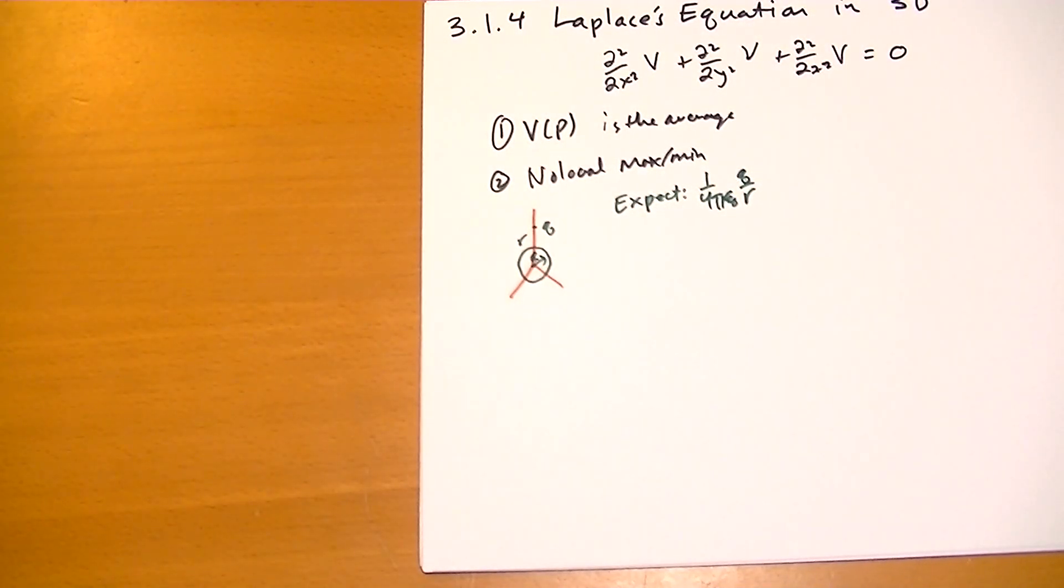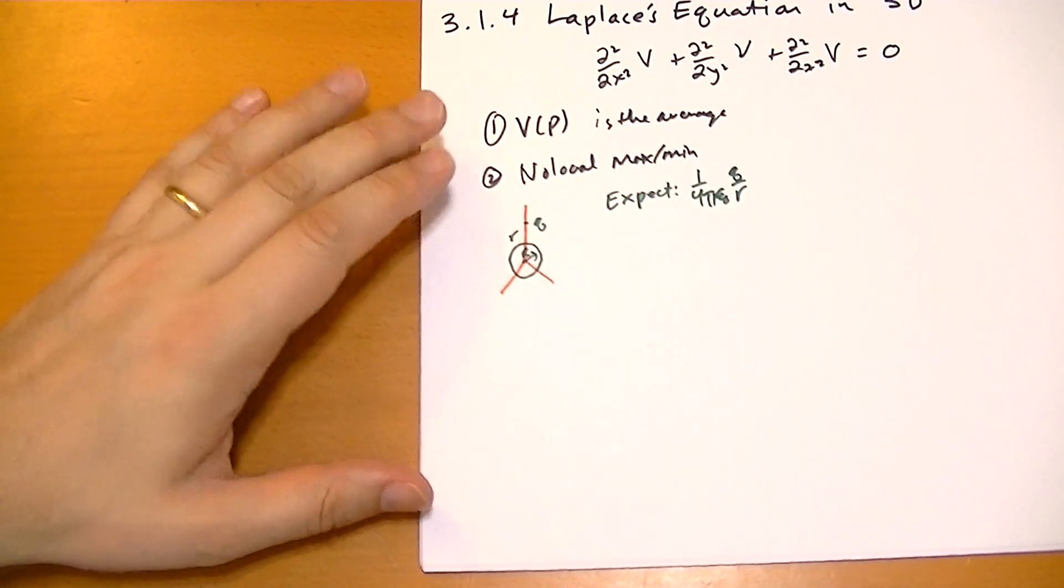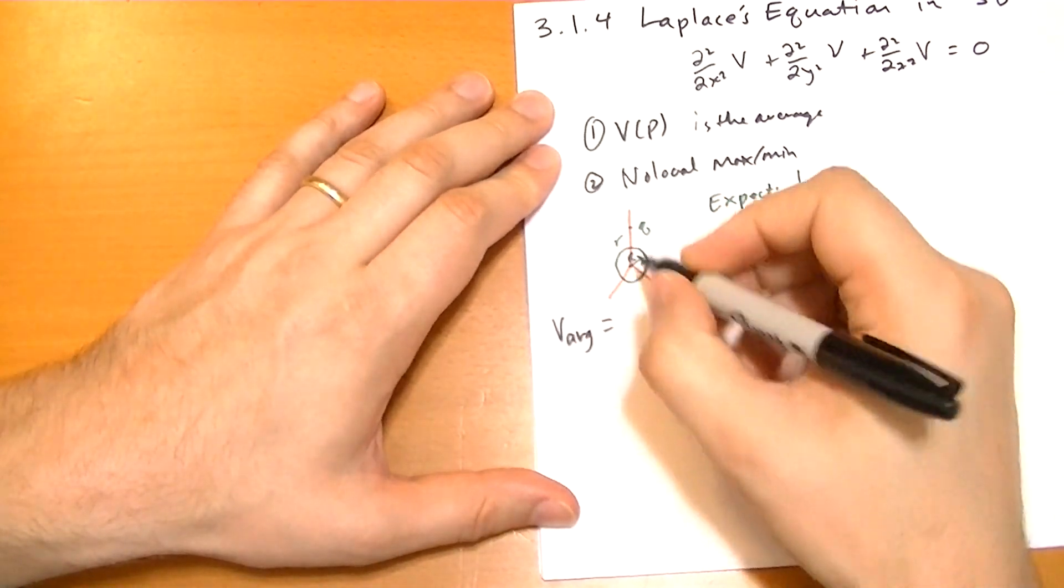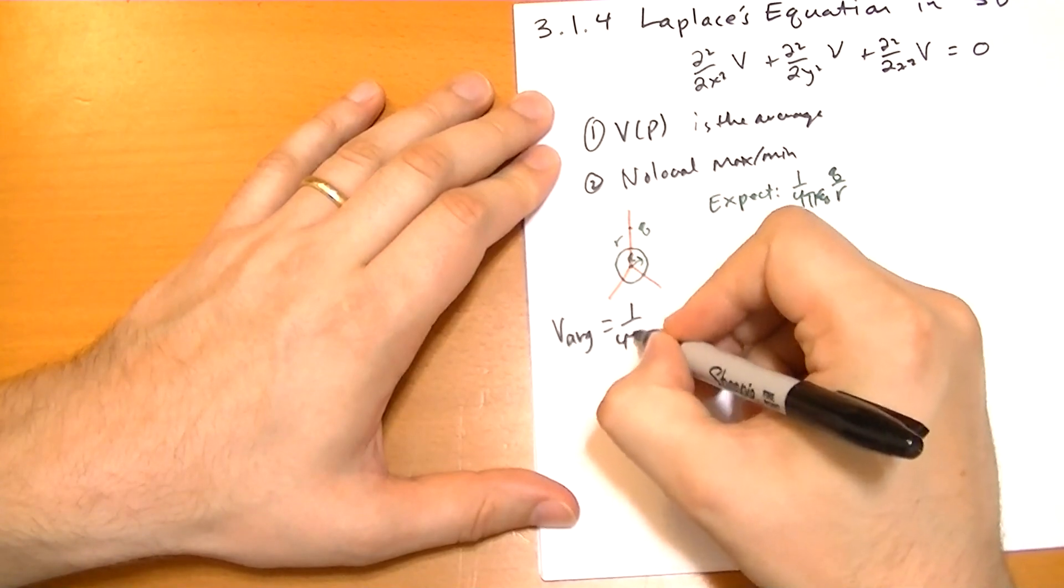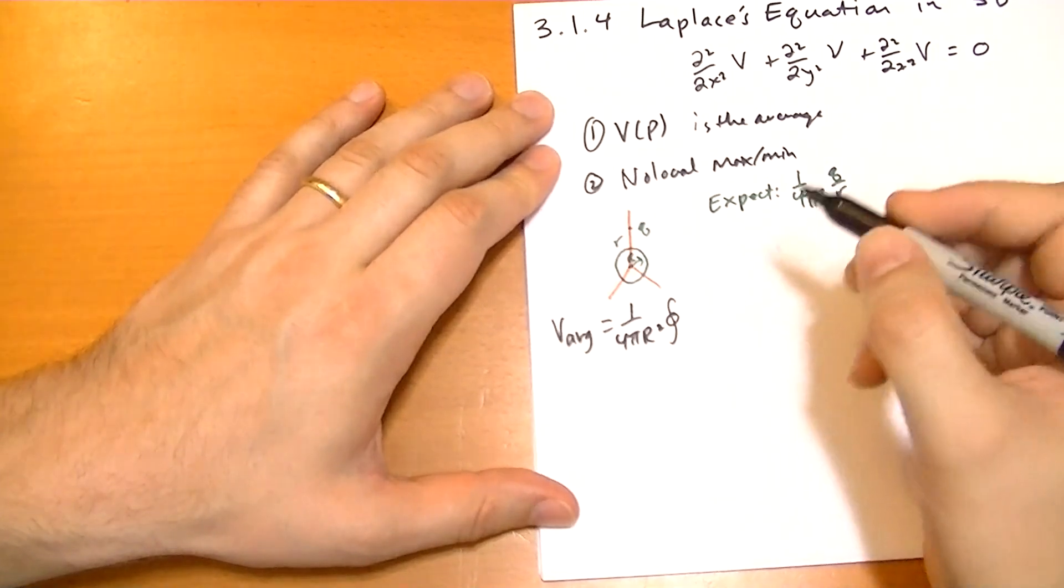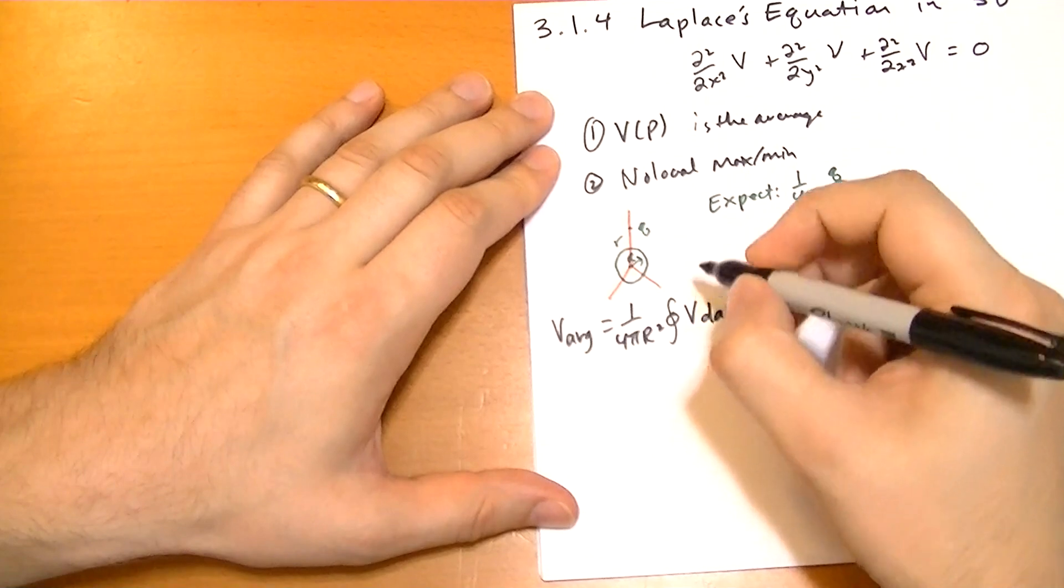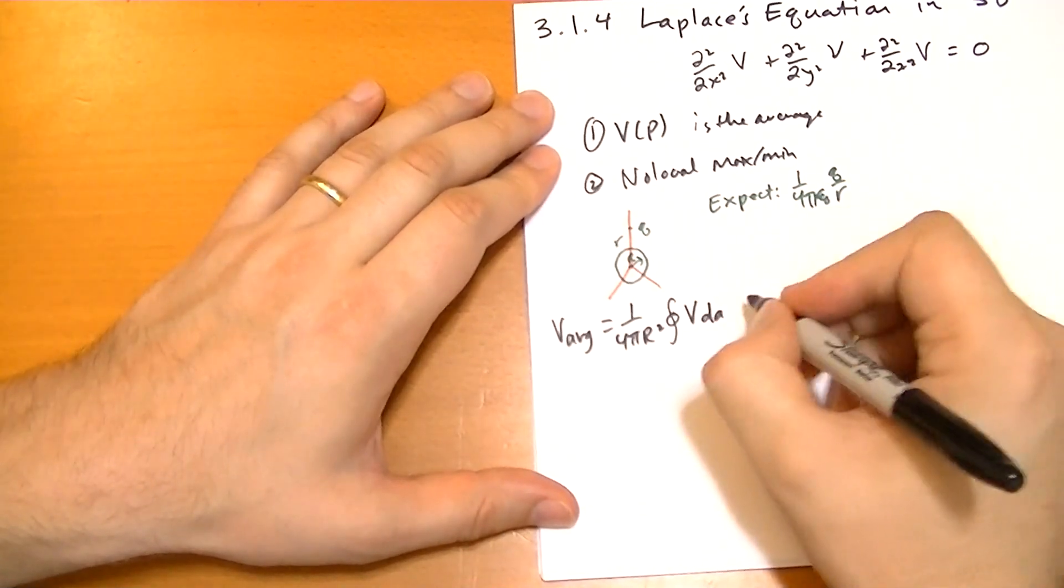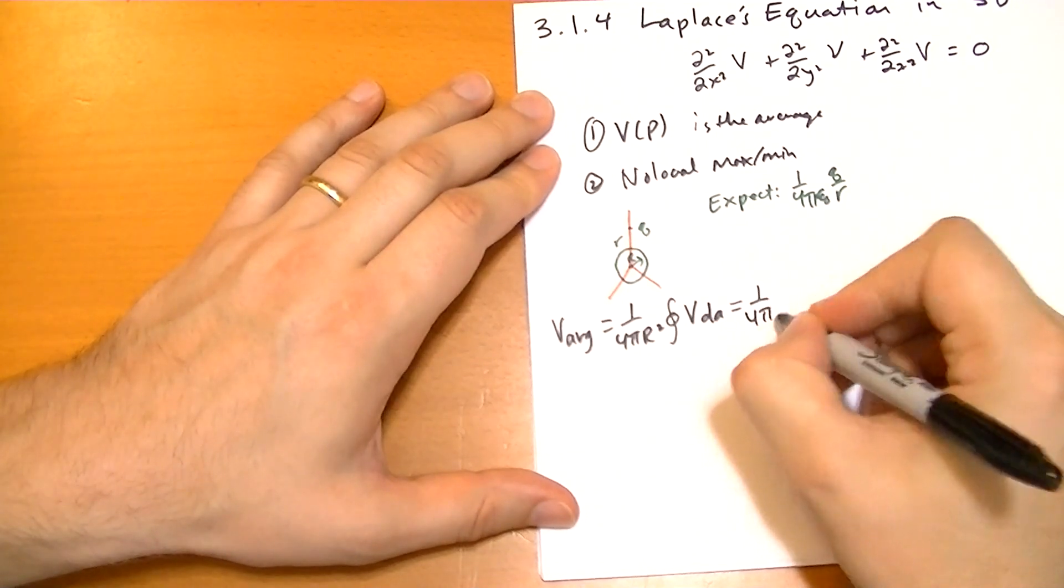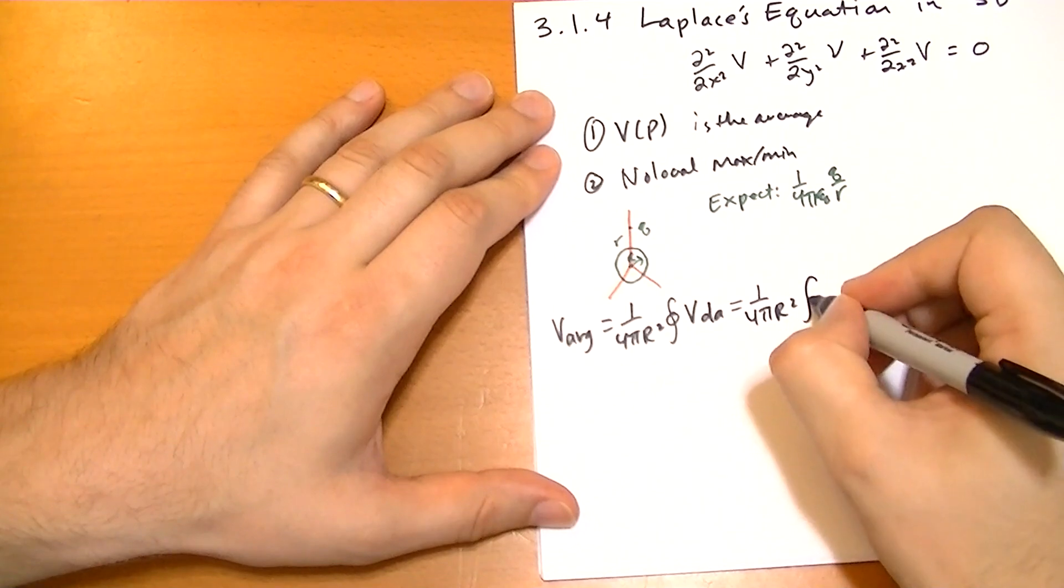So let's walk through this integral. So we start out with v average equals the surface area of the sphere, 1 over 4 pi r squared, times the integral of the potential for each of the points on that sphere. So writing that out in longhand, we have 1 over 4 pi r squared times the integral of the sphere.